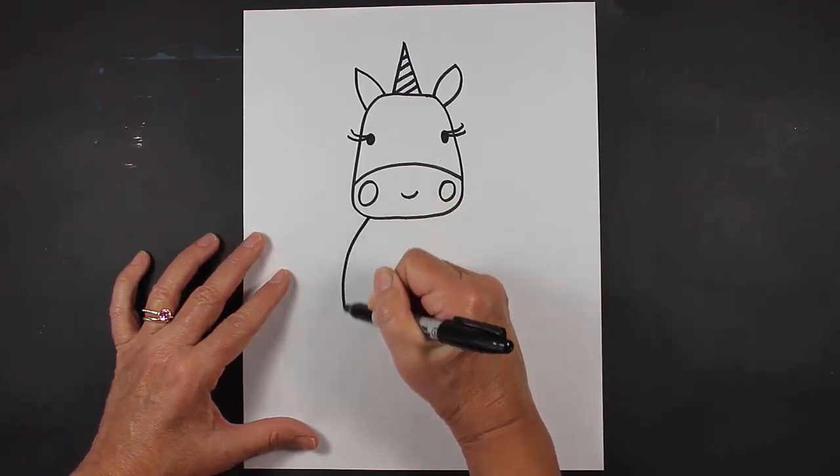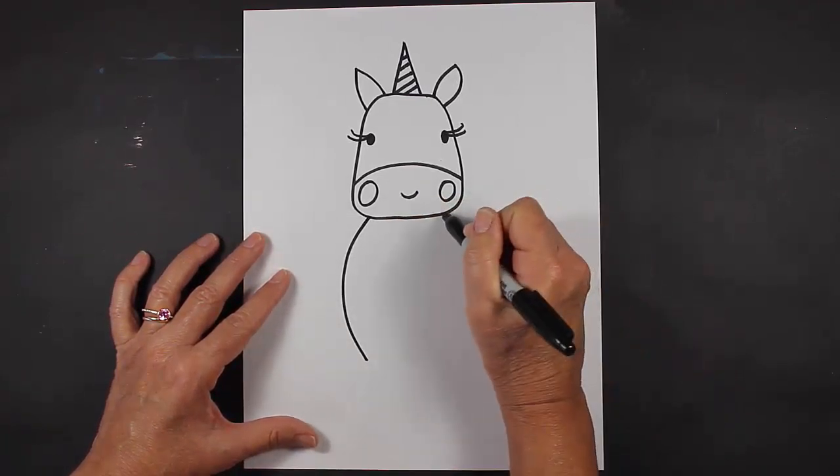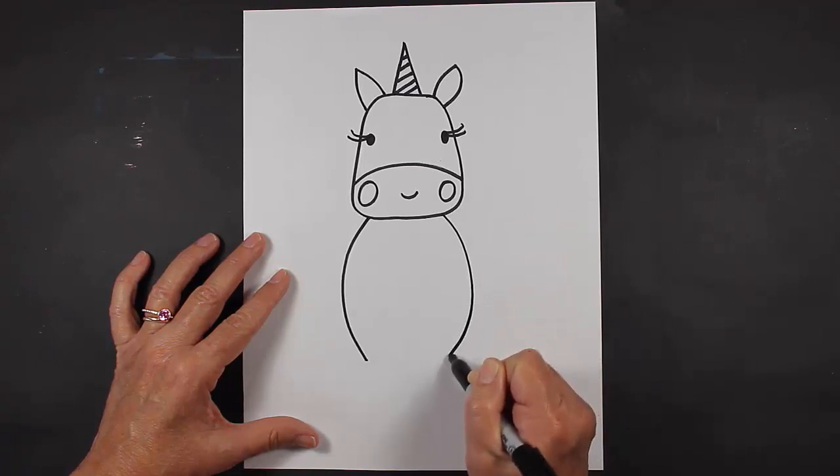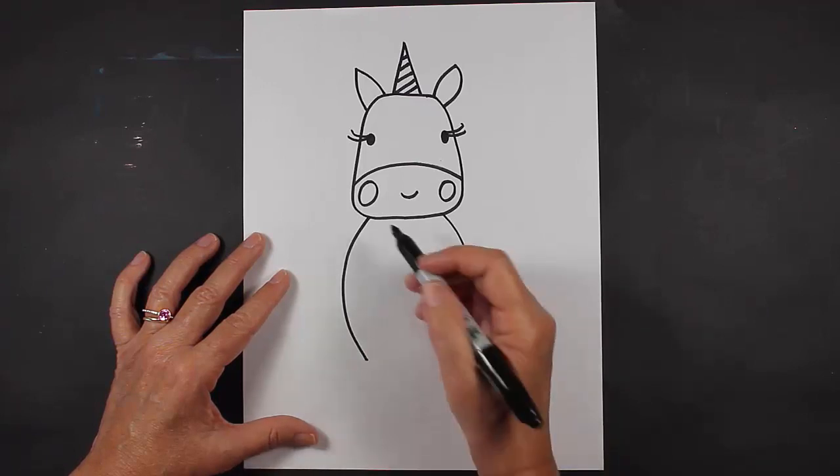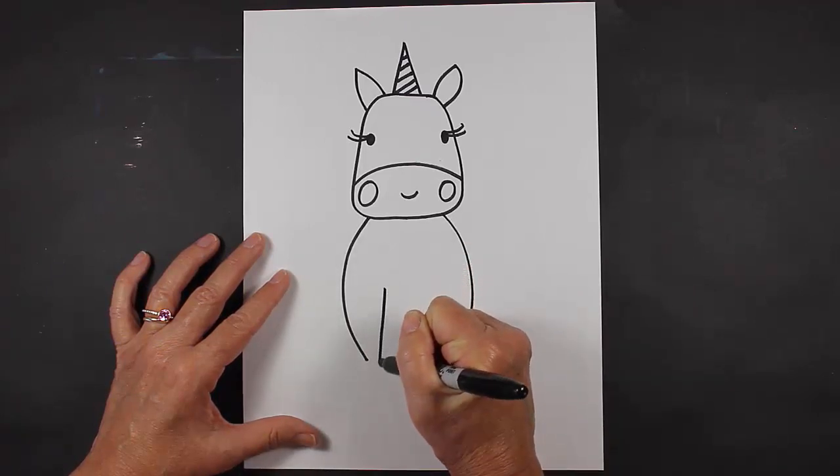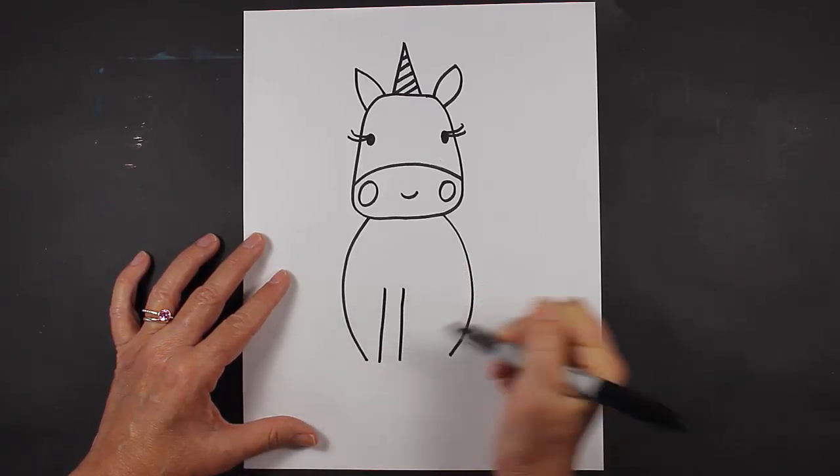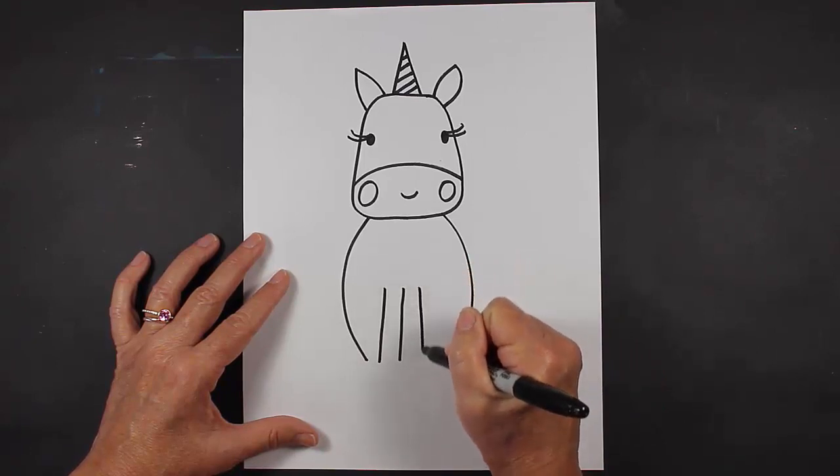We're going to make a curved line and another curved line—that's going to be the body of our unicorn. Then we're going to have two legs sticking down here in the front, so I have two lines here and I have two lines here.